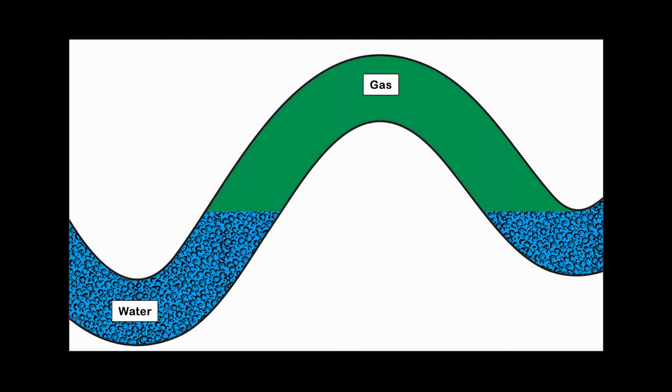In the case of a gas-saturated rock, the gas-water contact, GWC, represents the contact between gas-saturated rock and water-saturated rock at its deepest producible level. Again, the question would be, why is there only gas in this trap?